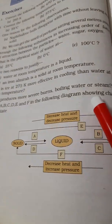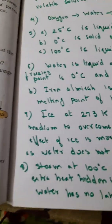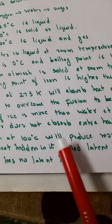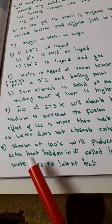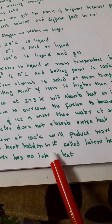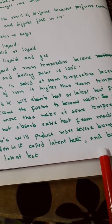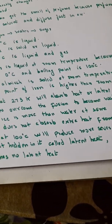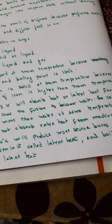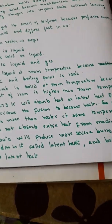And next question: what produces more severe burn, boiling water or steam? Of course steam will produce. Steam at 100 degrees Celsius will produce more severe burns. Because the extra heat hidden in steam is called latent heat, and the boiling water has got no latent heat. Steam has got hidden heat in it known as latent heat. Fine.